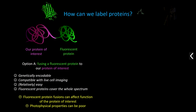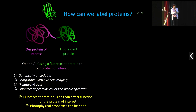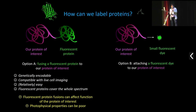But like every labeling method, fluorescent protein fusions are not perfect. They can affect the function of your protein of interest — this is not the same for every protein, but if you're interested in ion channels or receptors, there is a risk that fusing something relatively large can affect function. Also, if we compare photophysical properties, we can find dyes with better properties compared to fluorescent proteins.